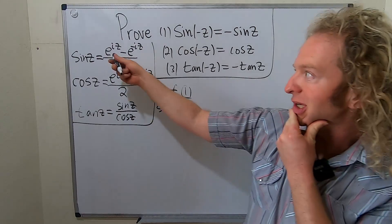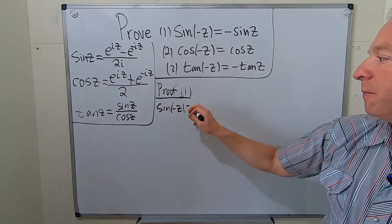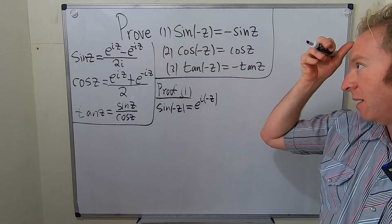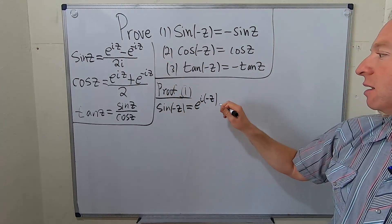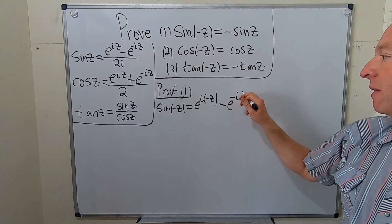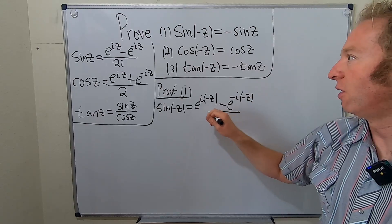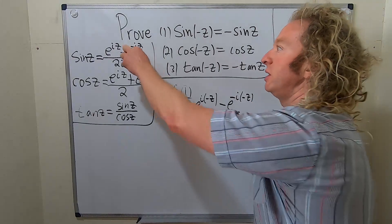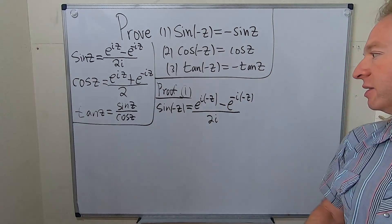So this is going to be e to the i negative z and then minus e to the negative i and then negative z all over 2i. So all we've done at this point is we've replaced z with negative z in both cases.